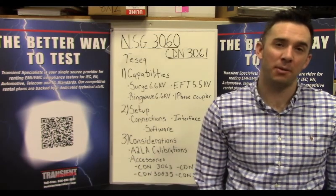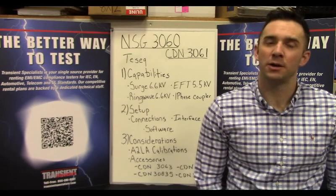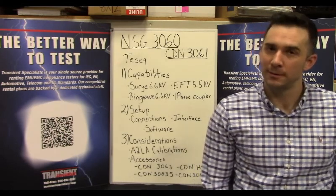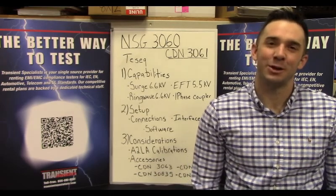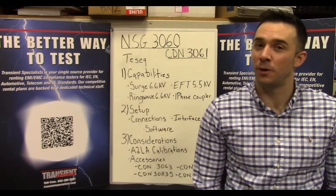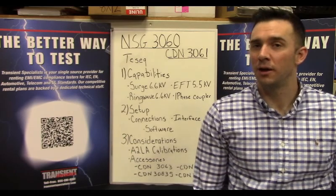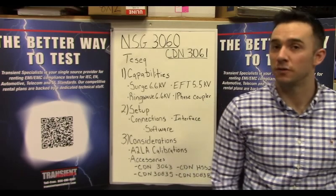Then we're going to talk about how to set it up, how to get everything connected, a little bit about the software, and then some commonly occurring issues we found that people have come across while trying to set this equipment up. And then finally we're going to talk about some additional testing considerations, including A2LA-created calibrations and some testing accessories as well. So that discussion is going to include the HSS2, the 3063, the 3083, and the 3061.